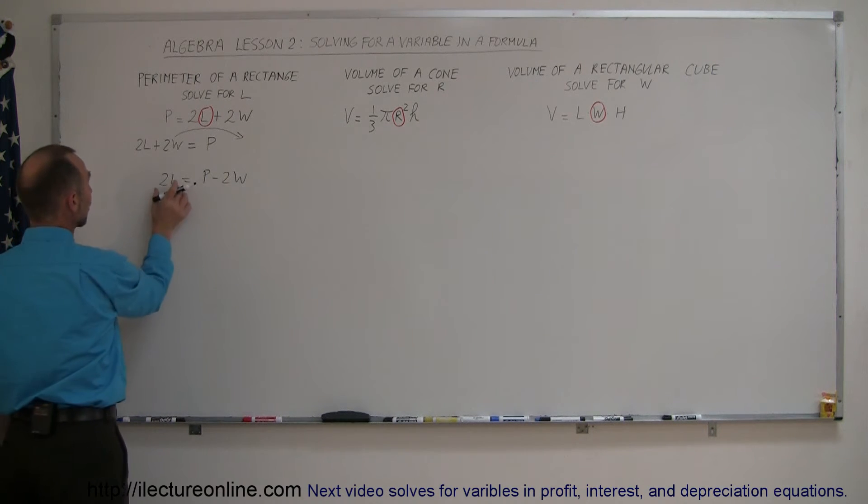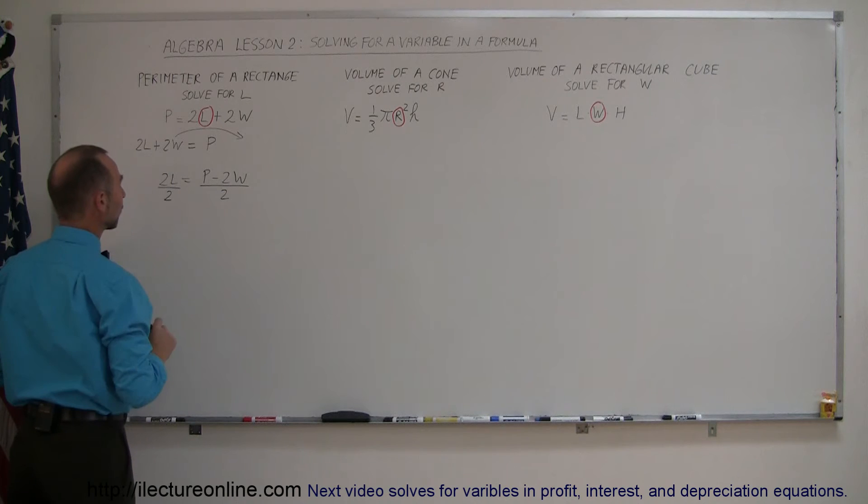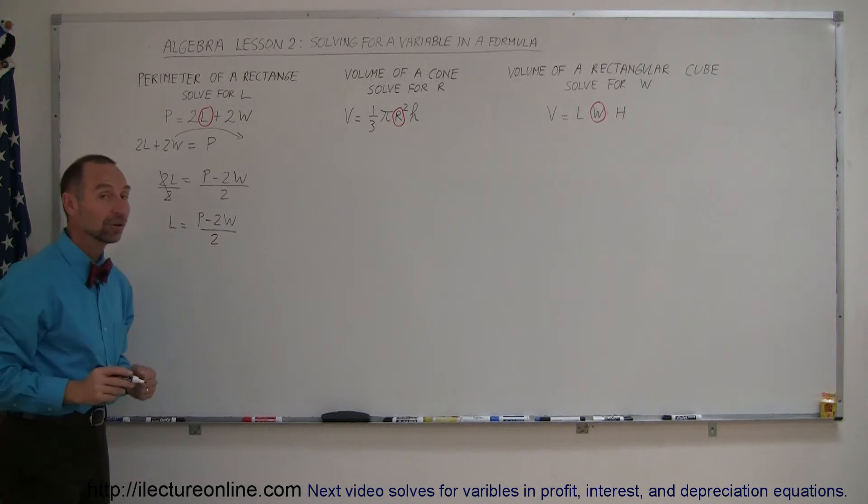Okay, the next step is to divide both sides here by the numerical coefficient of the variable looking for, which is 2, and divide both sides with the same number. This cancels out and I have L equals the perimeter minus 2 times the width divided by 2. All right, that's how you do that one.